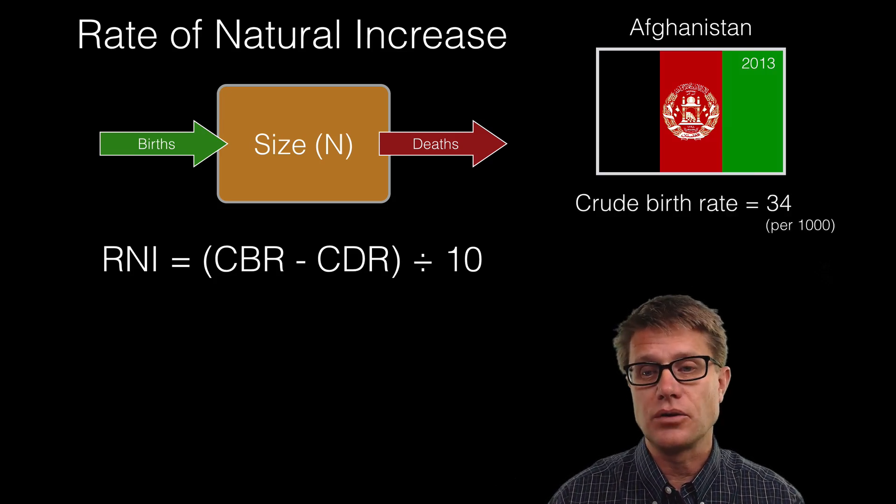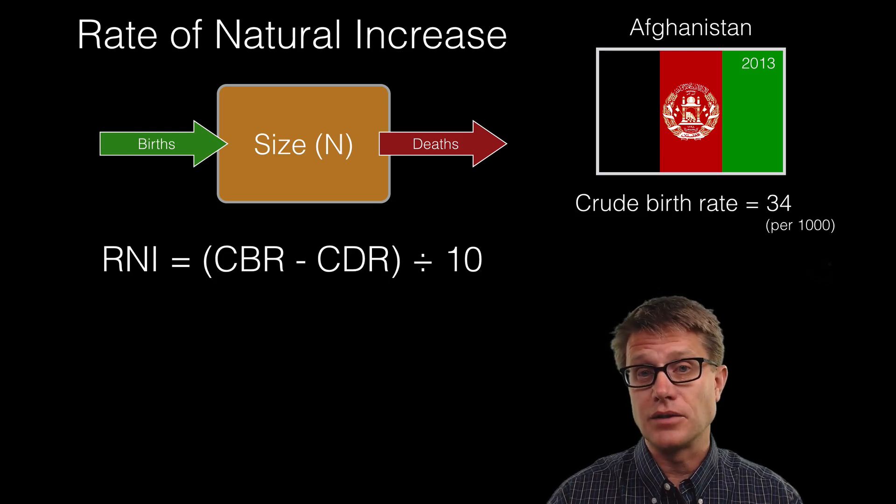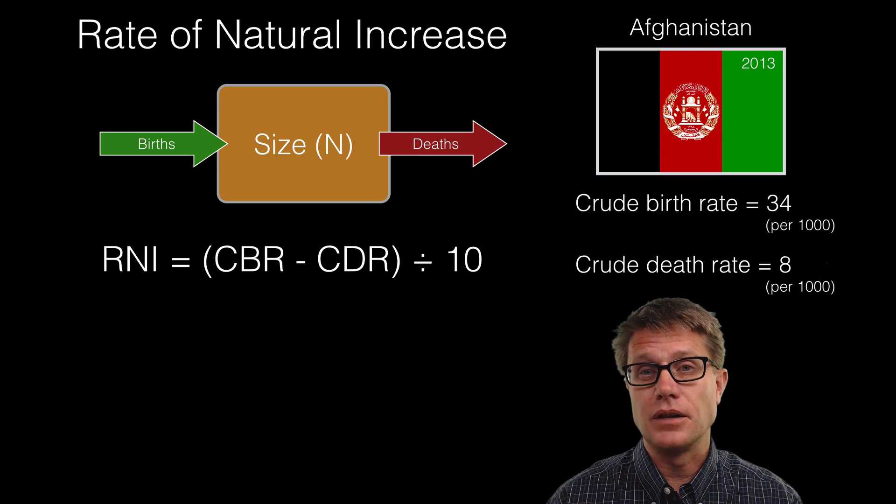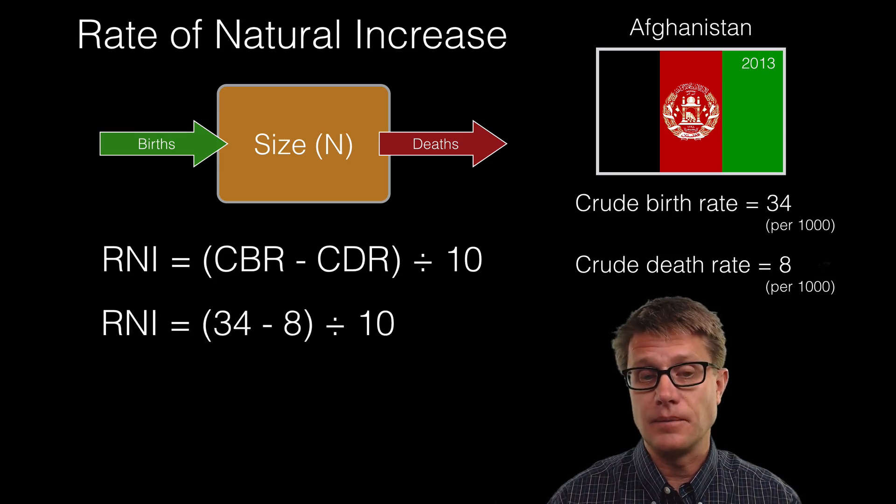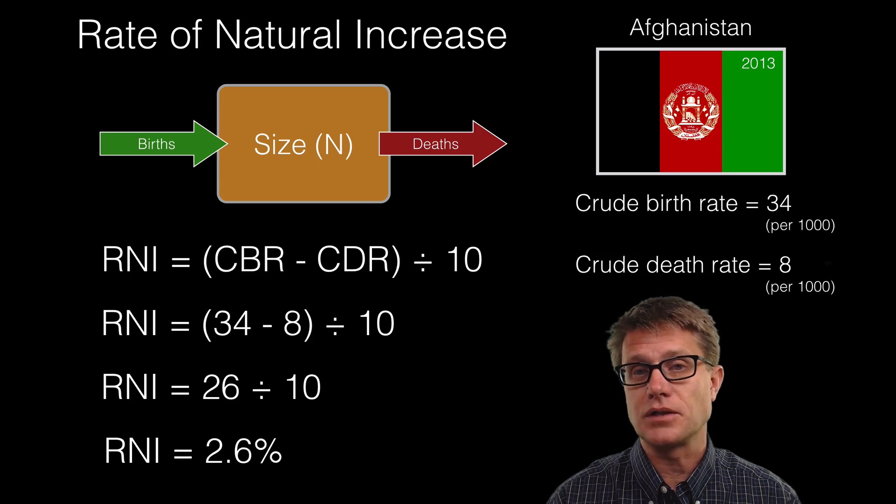So in 2013 the crude birth rate in Afghanistan was 34 people being born for every 1,000 people. Crude death rate is only 8. So if we want to figure out the rate of natural increase we just plug those values in. 34 minus 8 is 26 divided by 10 is 2.6 percent.